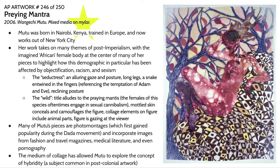We have themes of post-imperialism that are certainly present here. One specific consequence of post-imperialism and of the cosmopolitan nature of the world that is referenced here is the objectification of the African woman's body and the stereotypes associated therein. As an African woman, Mutu focuses on this convoluted stereotype in her work pretty frequently, including here. One facet of this stereotype deals with the seductress — a seducing figure that is somehow alluring but dangerous.